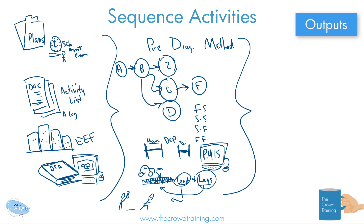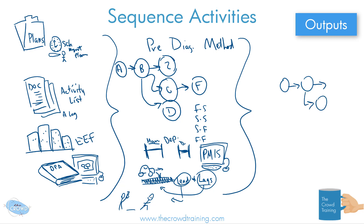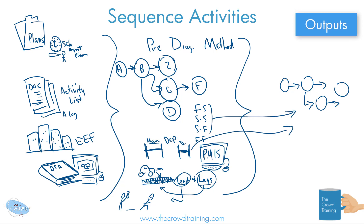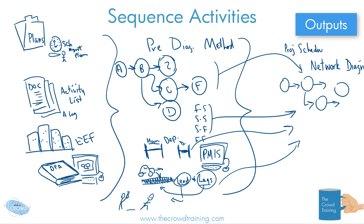Now let's move to the outputs. Since the whole point is to sequence activities, the output should be a sequence of activities — however they need to be performed — capturing relationships like finish-to-start or start-to-finish, whether they're mandatory, and any leads and lags. This is presented as a network diagram. How it's actually presented is up to you and your project team; different software systems will show this in different ways. Later, in the develop schedule process, you'll add timing and keep refining this network.